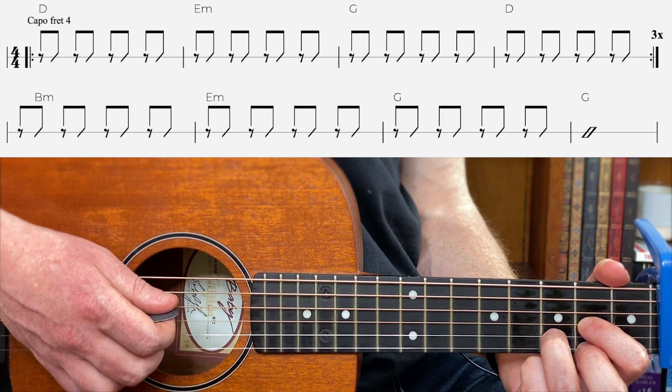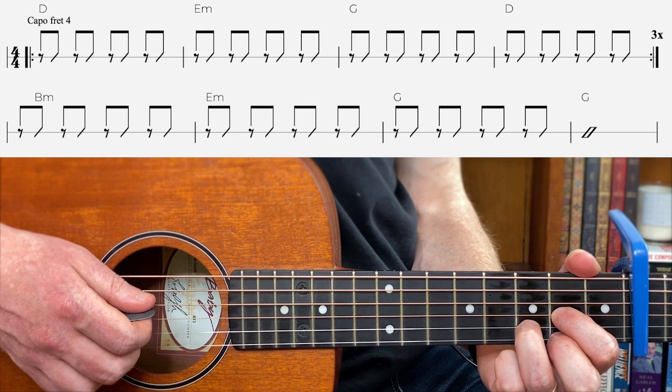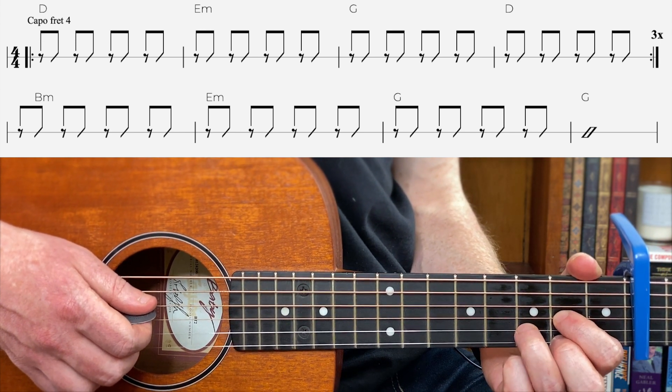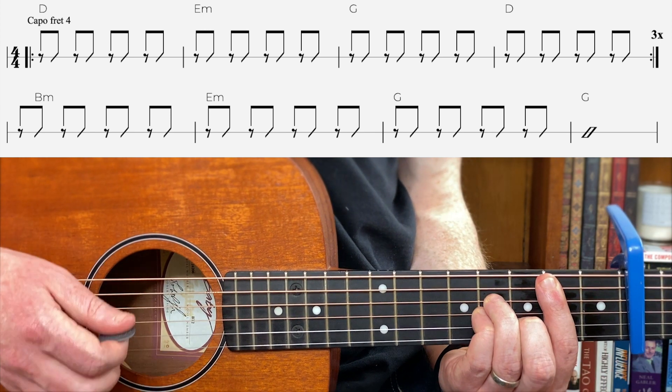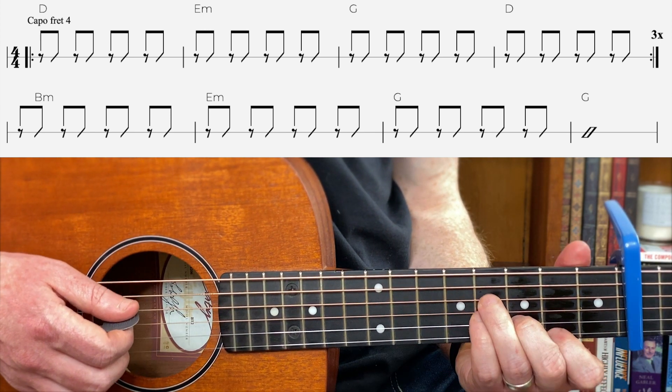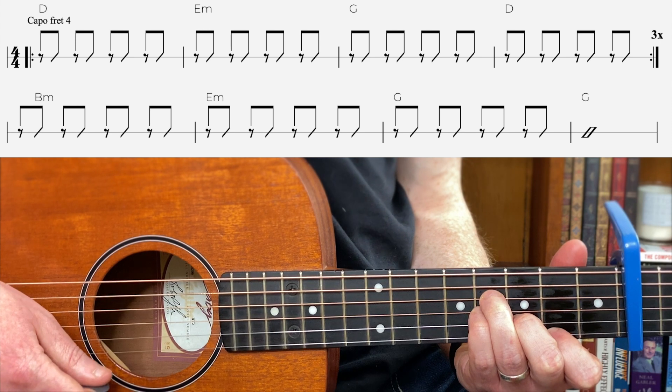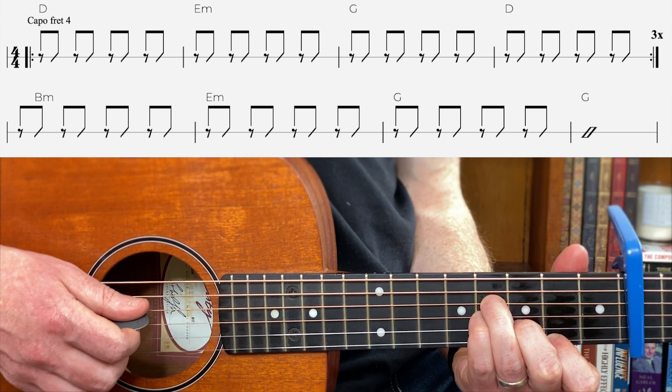All right. So you may have looked at it and gone, not much has changed. Well, not much has changed. Just the second line goes for B minor. Okay. And again, the simpler version is that one if you want to use it. Right. So that would be verse two.